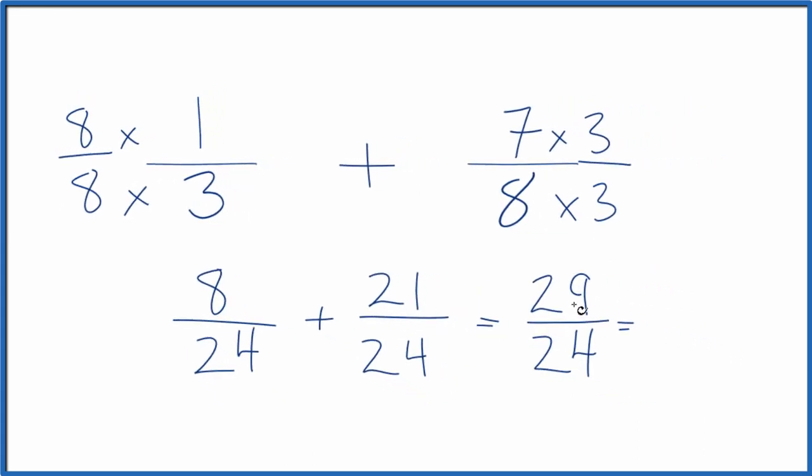24 goes into 29 one time with five left over. Then we just bring the 24 across. So 29 24ths, that improper fraction does equal the mixed number one and five 24ths.